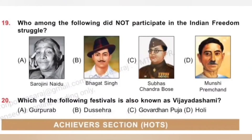Question 19: Who among the following did not participate in the Indian freedom struggle? Options: A. Sarojini Naidu, B. Bhagat Singh, C. Subhas Chandra Bose, D. Munshi Premchand. Sarojini Naidu, Bhagat Singh and Subhas Chandra Bose were freedom fighters, whereas Munshi Premchand was an Indian writer famous for his modern Hindustani literature. Option D, Munshi Premchand, is the correct answer.